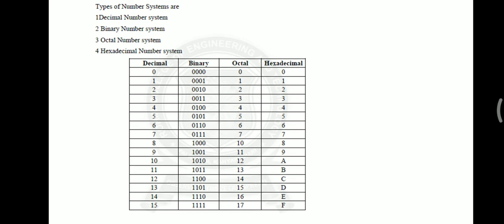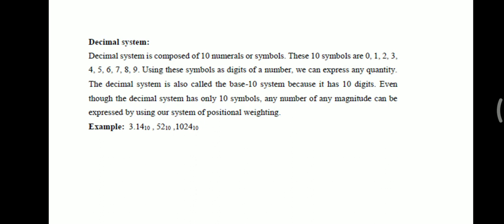The octal number system is written as 0, 1, 2, 3 up to 7. Next is the hexadecimal number system. After 9, it won't use 10 as two digits — instead, alphabets are assigned: from 10 onward, we assign A, B, C, D, E, and F. So instead of representing 10 as '1 0' or 11 as '1 1', we represent them using the letters A through F.